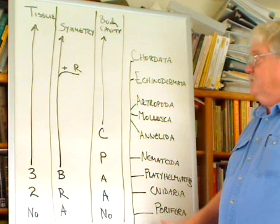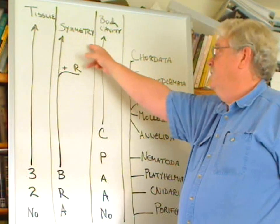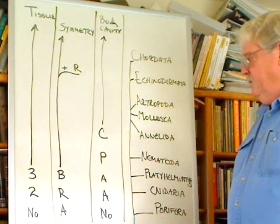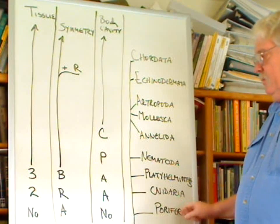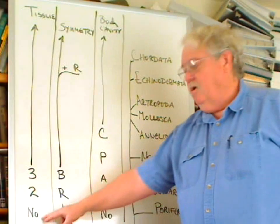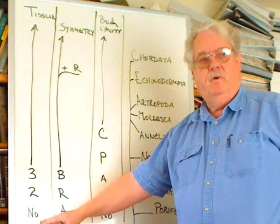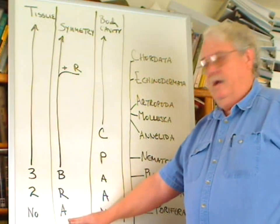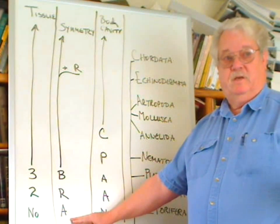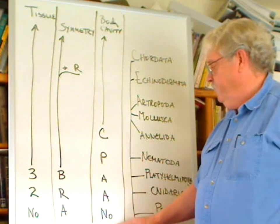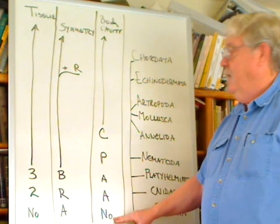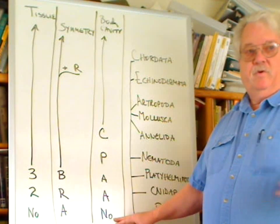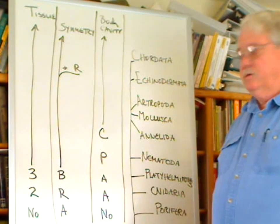Now, relative to this, if we look at tissue, symmetry, and body cavity for each of these: starting with the Porifera, they have no true tissue. They are asymmetrical — they sit in one place. And they have no body cavity. You can't have a body cavity if you do not have the three tissue layers.